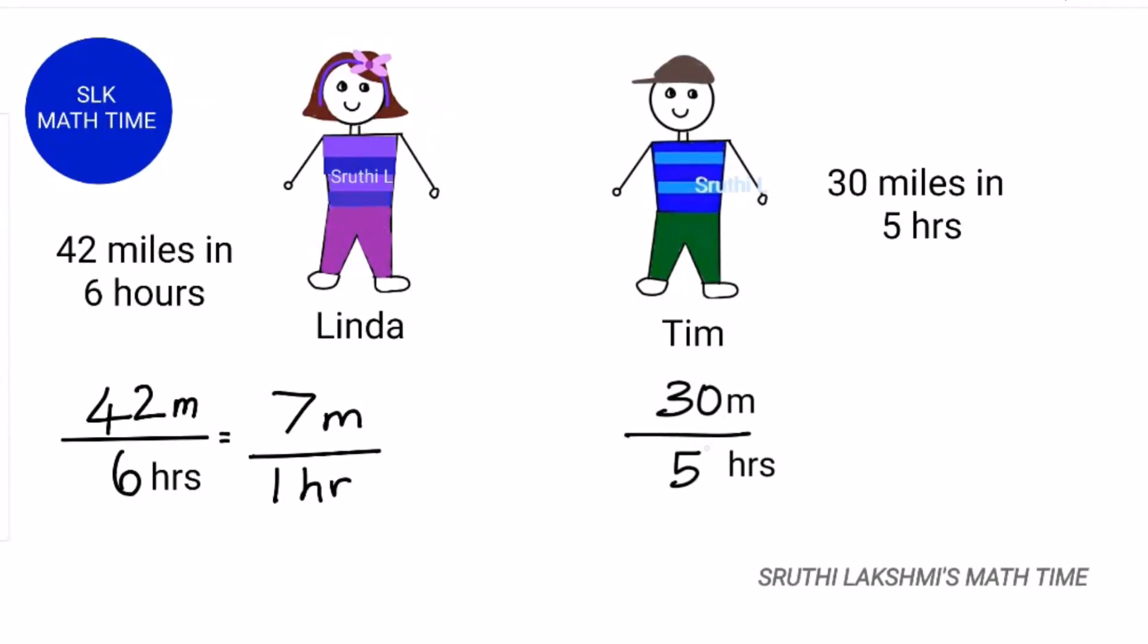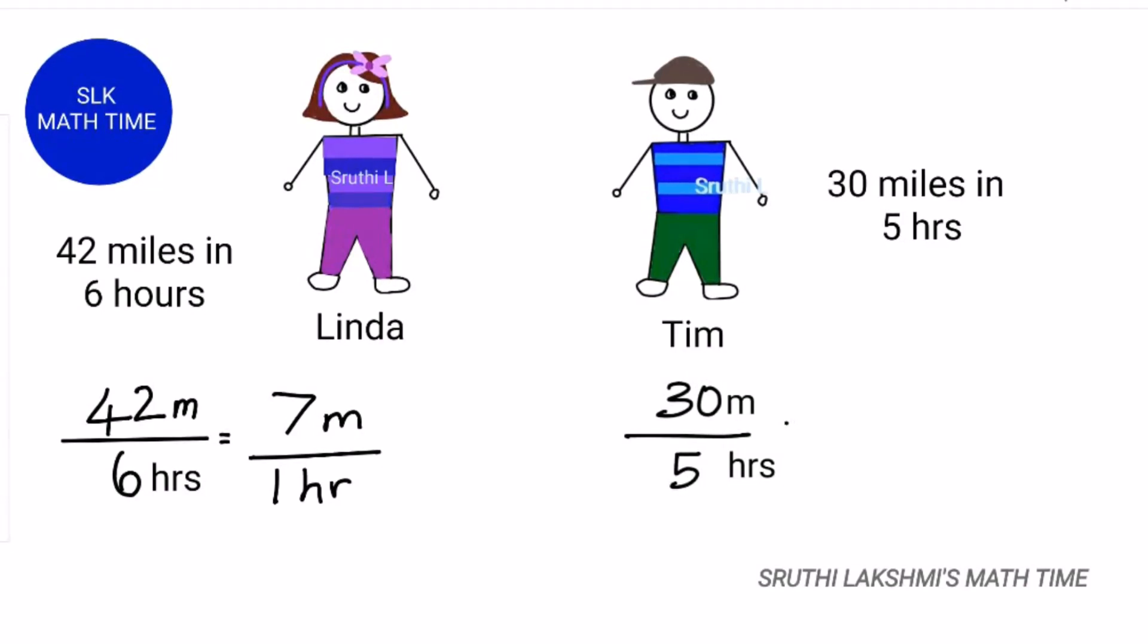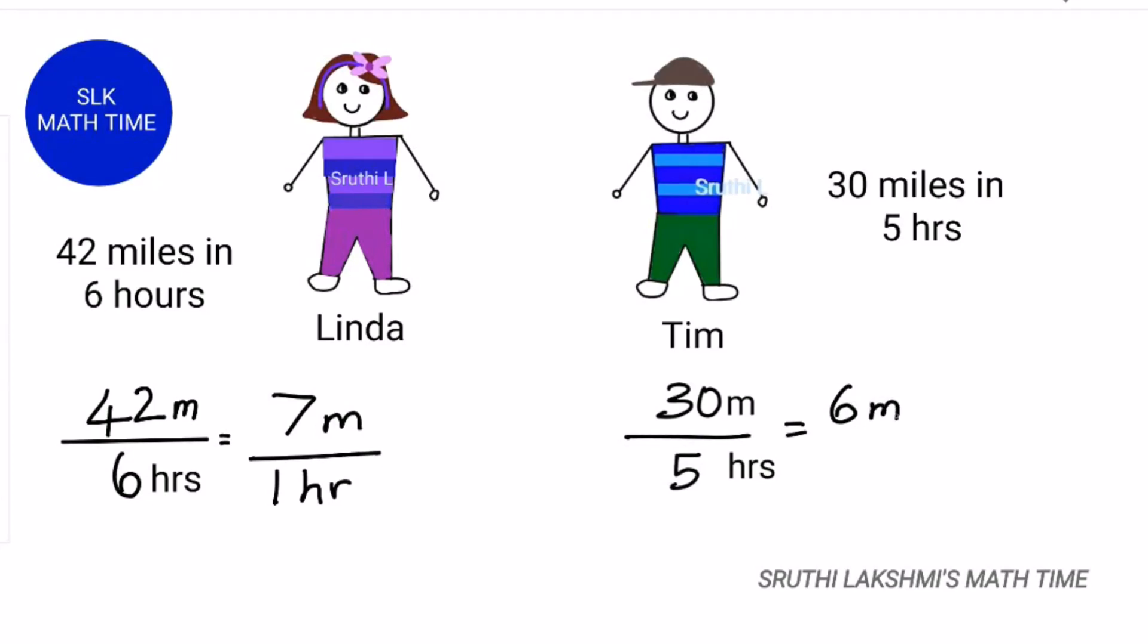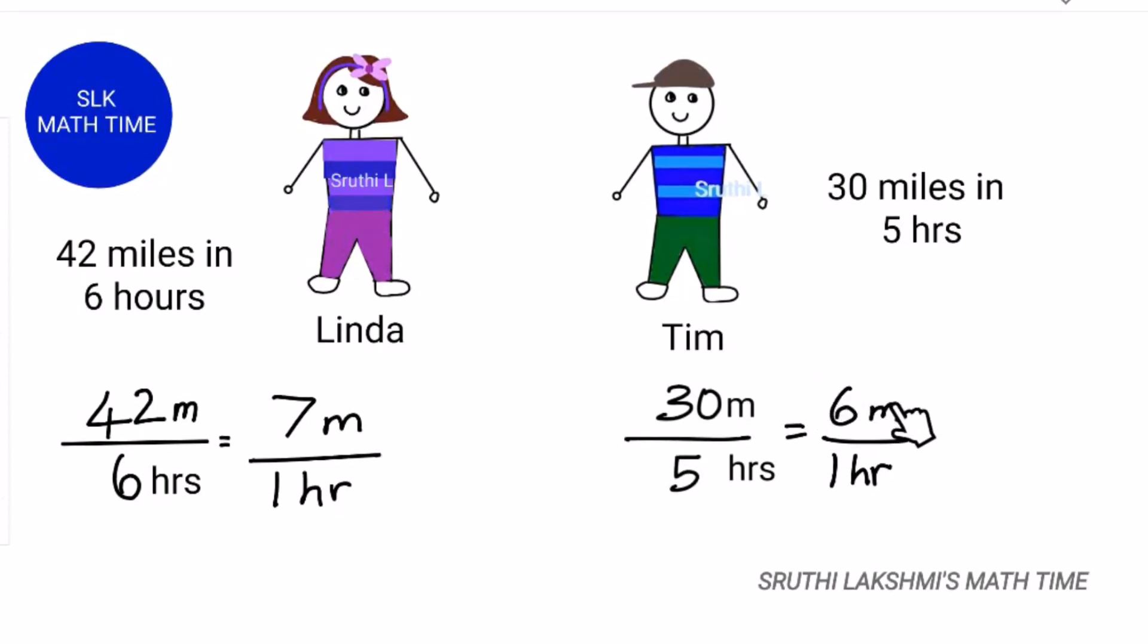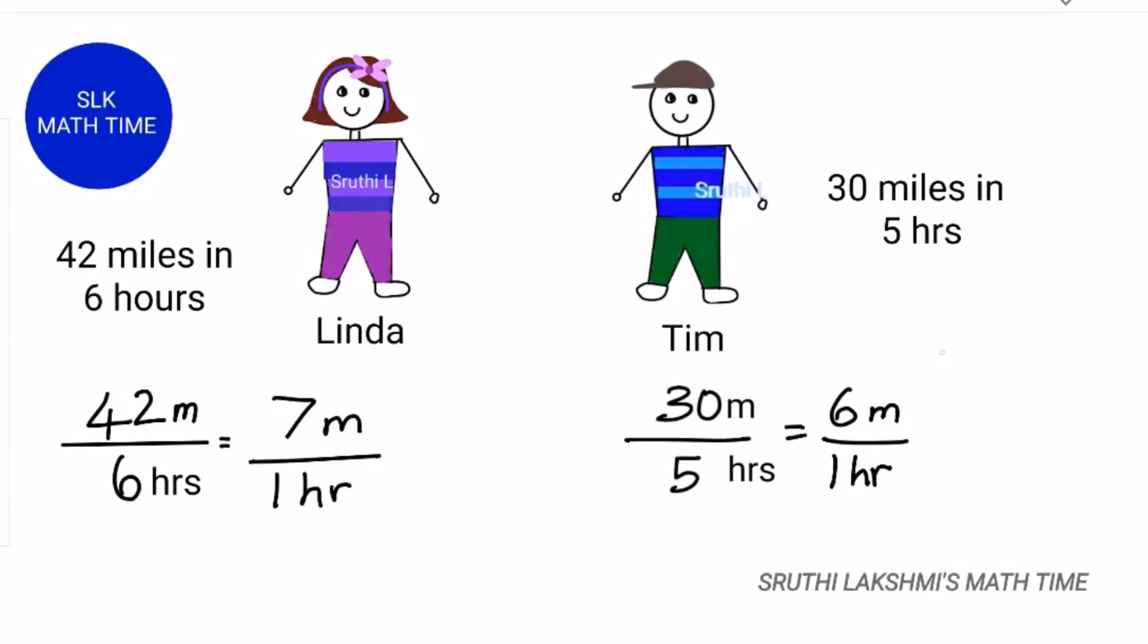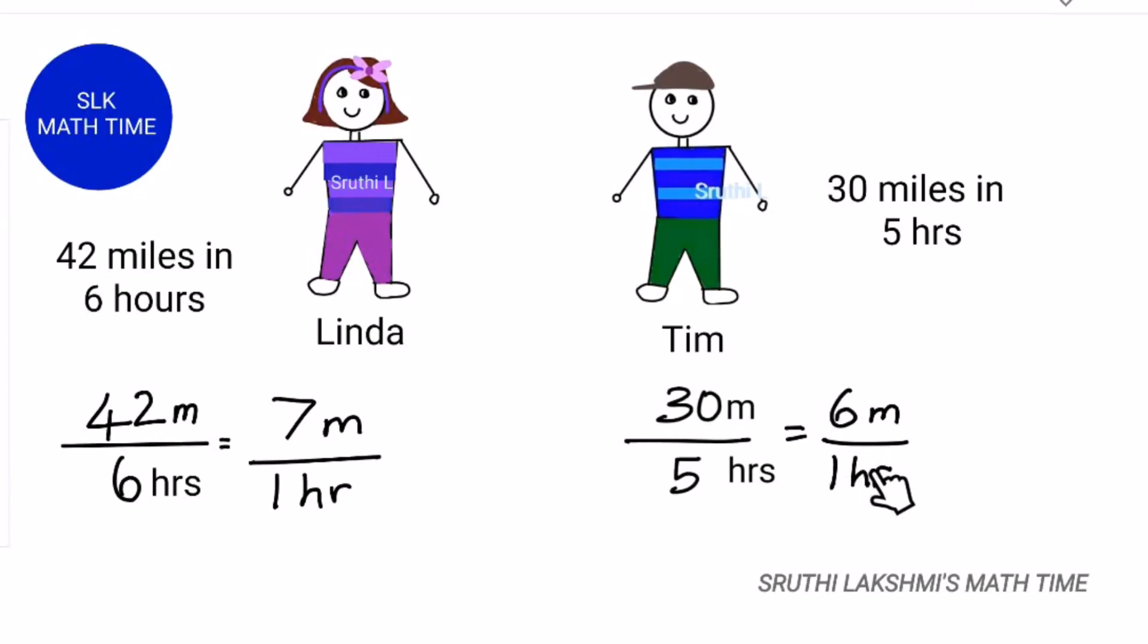Now let's convert for Tim. 30 by 5. Do 30 divided by 5 which is 6 miles, and 6 can be written as 6 by 1. The numerator denotes miles while the denominator denotes hours. So Tim can jog 6 miles in 1 hour.